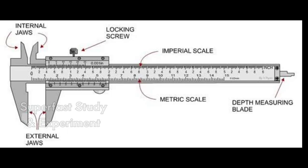Now let us know about its parts. This is the internal jaw on the top. Internal measurement is taken from this. I am going to show you everything practically later. This is the external jaw below. With this, the measurement of the external surface of an object is taken, external outer measurement. Here is the locking screw. This scale is a metric scale. And here you can see there is a blade for depth measurement at the end, the depth measurement blade.